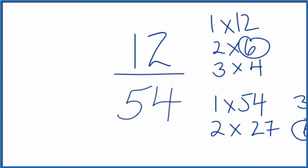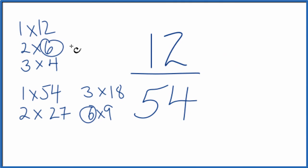Let's move these over here. So we'll divide 12 by 6, that'll give us 2. And then if we divide 54 by 6, that gives us 9. And we can't reduce this any further.